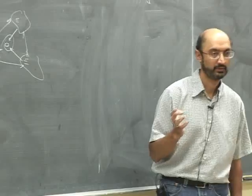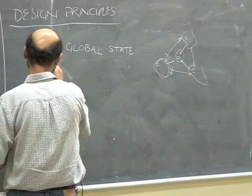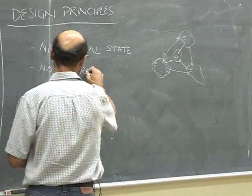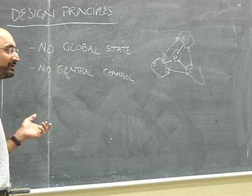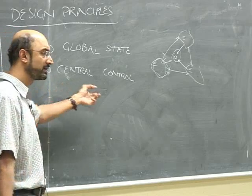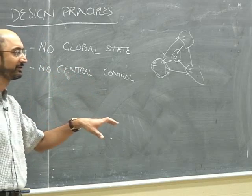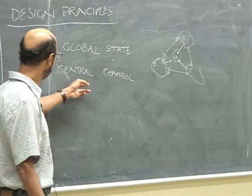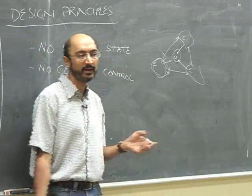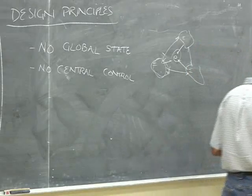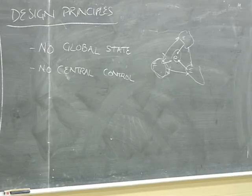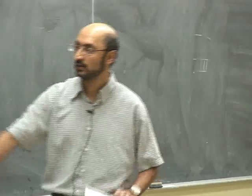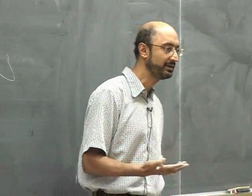The second design principle is no central control. We have a distributed system — there's no central controller saying 'you must do this, you should do that.' An example of central control would be a global lock manager managing all accesses to all entities. If you had one central lock manager for all of Facebook with 800 million users, every request going to that centralized manager — nothing would really work, it wouldn't scale up at all. No central control is necessary for scalability and to avoid single points of failure.